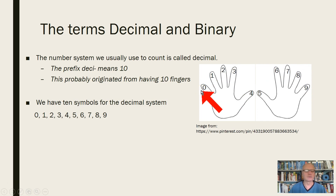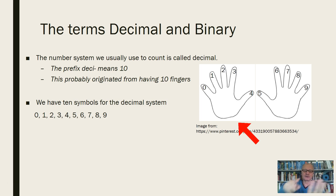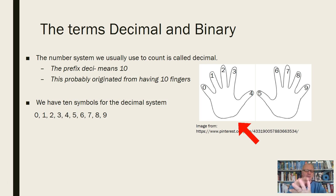Here's what throws people off sometimes. If I was going to count my fingers, I would count like this: 1, 2, 3, 4, 5, 6, 7, 8, 9, 10. And I'd say I have 10 fingers. But notice that when I counted the 10th one, there are really two symbols — two digits involved: a 1 and a 0.